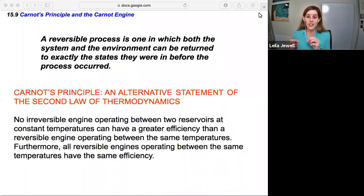So the Carnot Principle is an alternative way to state the second law of thermodynamics. And it goes something like this, that no irreversible engine operating between two reservoirs at constant temperatures can have a greater efficiency than a reversible engine operating between those same temperatures. Furthermore, all reversible engines operating between the same temperatures have the same efficiency.